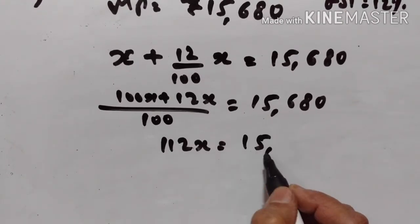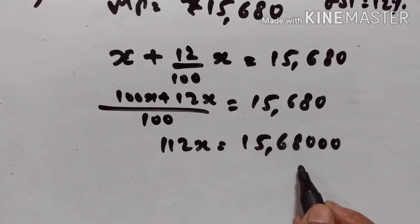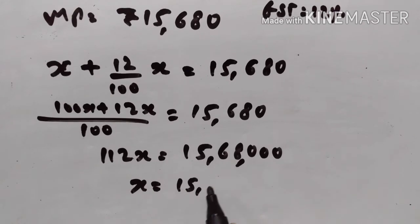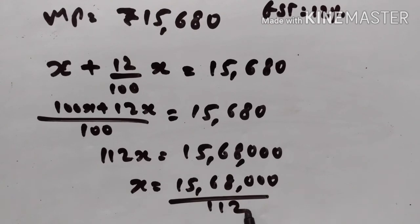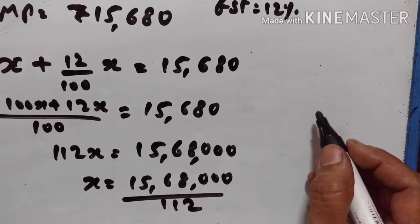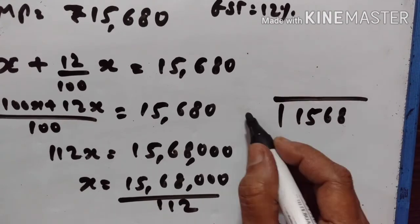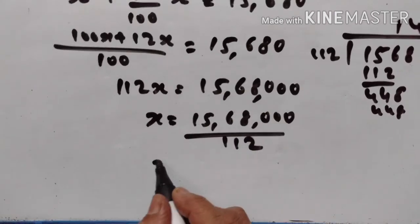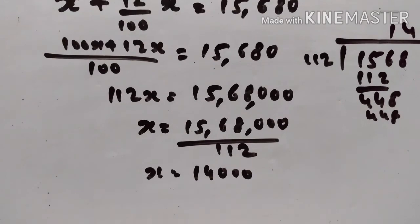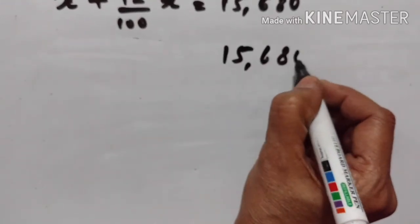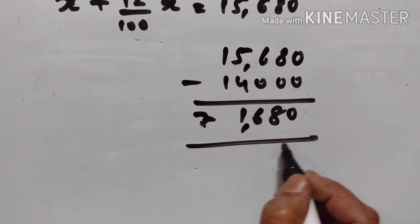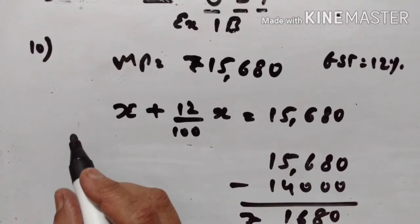112X is equal to 15,680. X is equal to 15,680 divided by 112, which equals Rs.14,000. So the reduced price is Rs.14,000. Therefore, the required reduction is Rs.15,680 minus Rs.14,000, which is Rs.1,680.